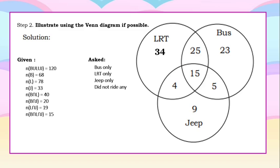Now that we have completed our Venn diagram, let's verify. Add up all the numbers in the LRT circle: 34 plus 25 plus 15 plus 4 equals 78 — correct. Add up all the numbers in the bus circle: 25 plus 23 plus 15 plus 5 equals 68 — also correct. For the Jeep circle: 4 plus 9 plus 5 plus 15 equals 33 — correct. This verifies that our given cardinalities match.